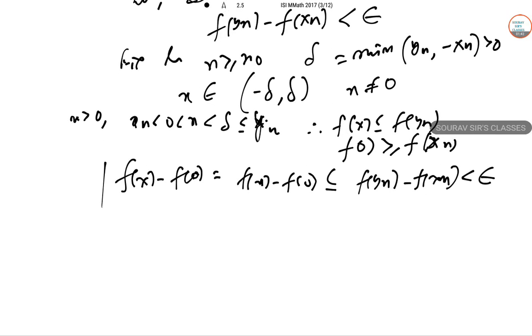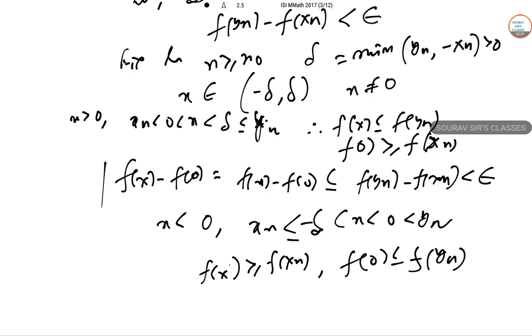If x < 0, then xn₀ ≤ -δ < x < 0 < yn₀. This gives f(x) ≥ f(xn₀) and f(0) ≤ f(yn₀).